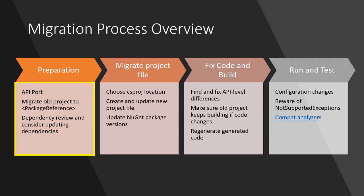The second step is actually migrating the project file itself. .NET Core projects use the new SDK-style csproj file format, so you need to either create a new project file for your .NET Core port or update the existing csproj file to use the SDK style.